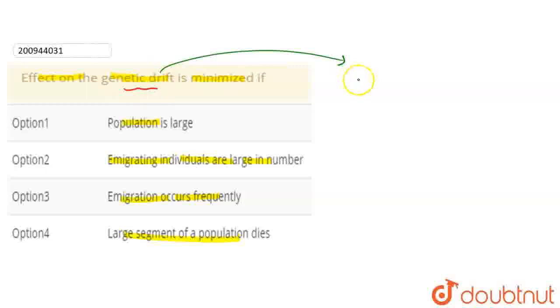First of all, we will see what is genetic drift. Genetic drift is a change in the frequency of an allele within a population over time.